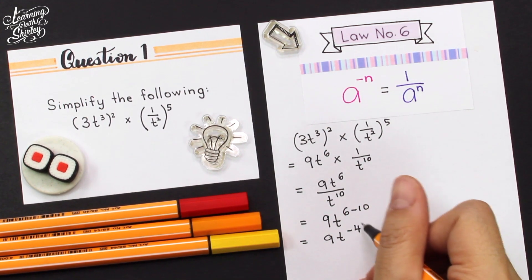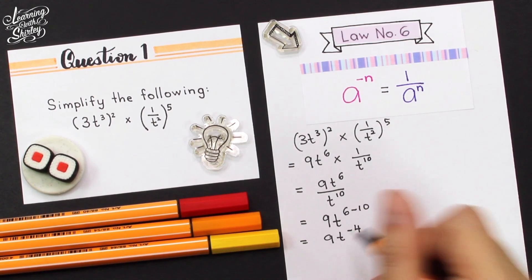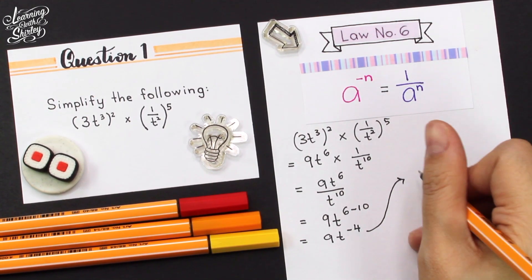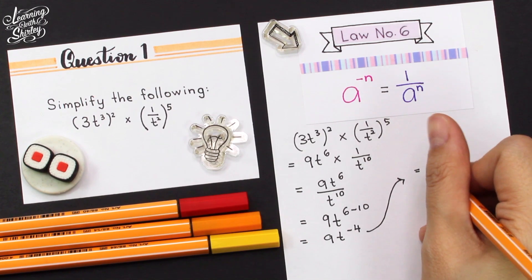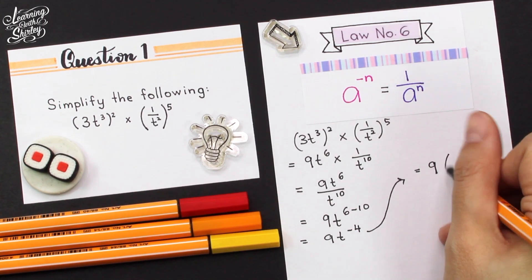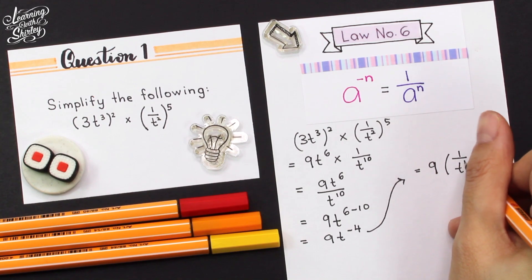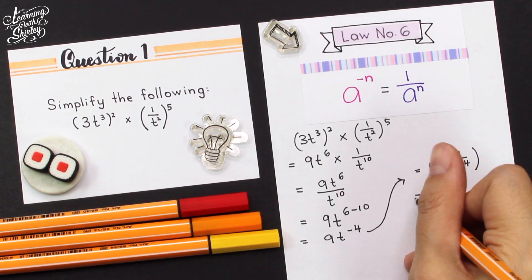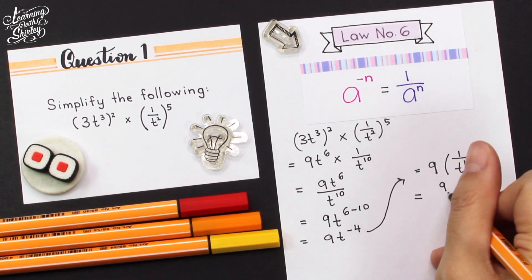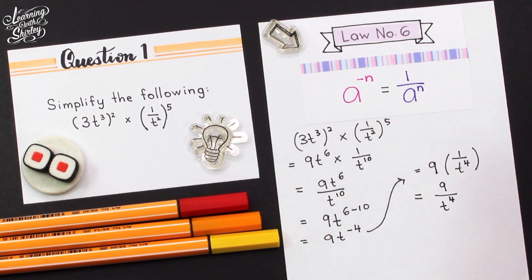So this is a negative index, and we cannot leave this as the final answer. We have to change it: t to the power of negative 4 becomes 1 over t to the power of 4. Therefore, the final answer is 9 over t to the power of 4.